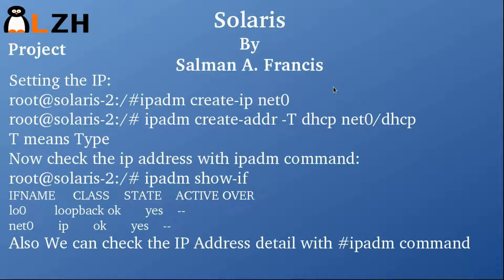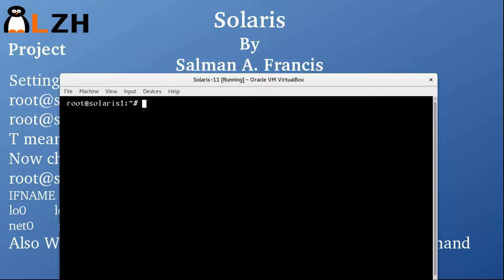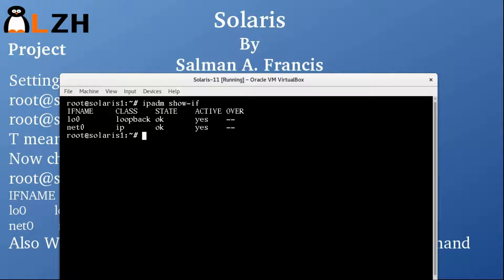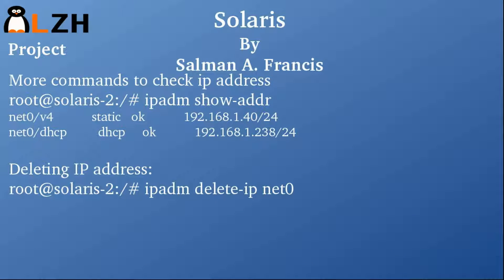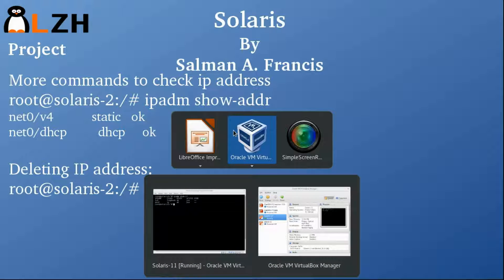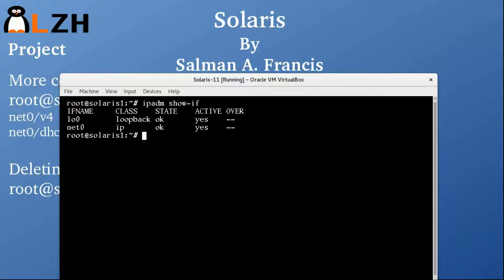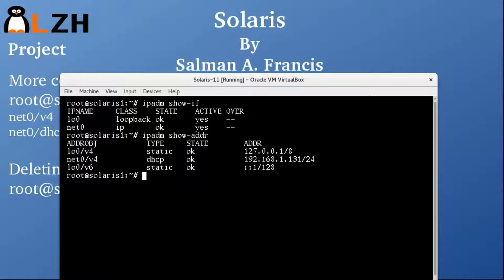You can also check IP address details with the IPADM command. The command IPADM show-if is for interface — it shows you if your interface state is up and what kind of state the interface is. You can see we have the loopback interface and net0, which is our Ethernet. IPADM show-addr will give you the address and also tell you the type — you can see the type is DHCP.